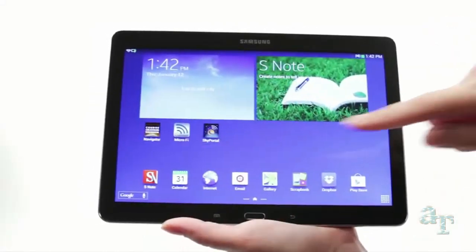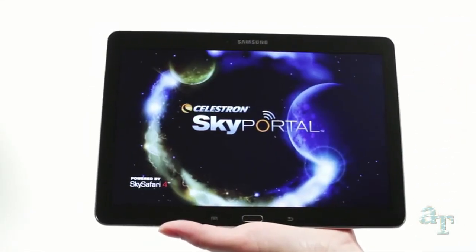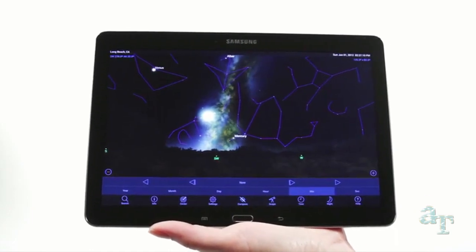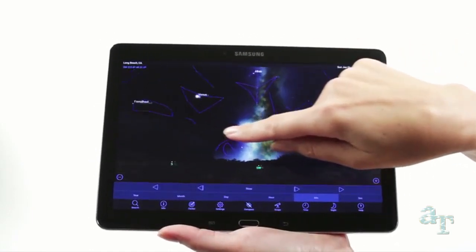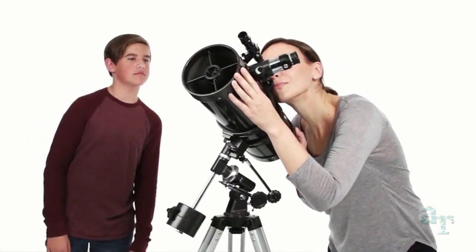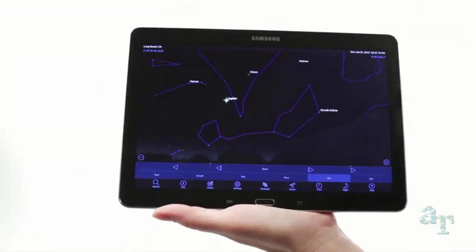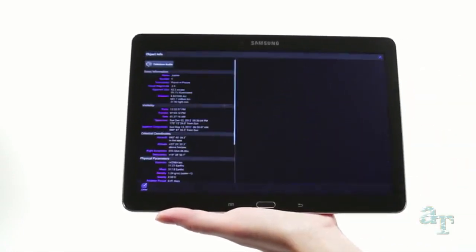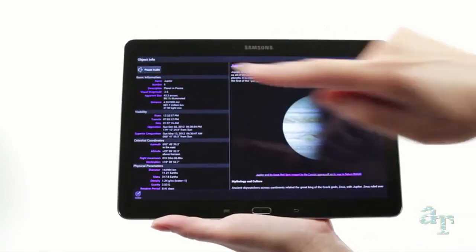When you're out under the stars, use Celestron's free SkyPortal mobile app for iOS and Android to locate objects in the night sky. Center the object in the finderscope and it's ready to view. As you observe, listen to SkyPortal's audio descriptions for the most popular objects. Happy stargazing!